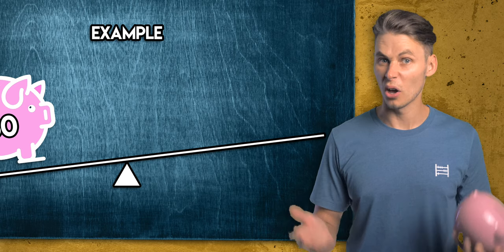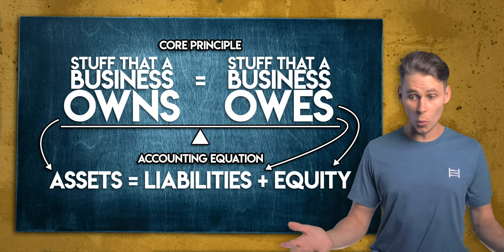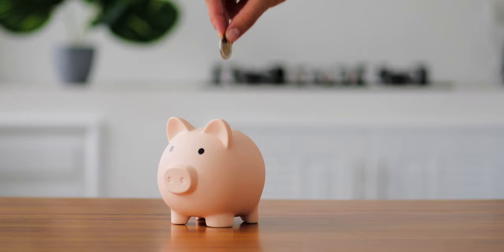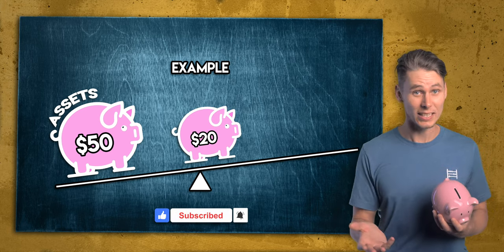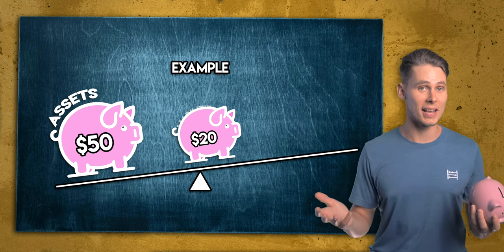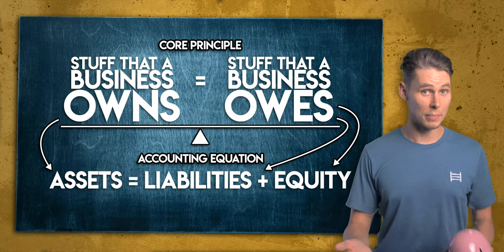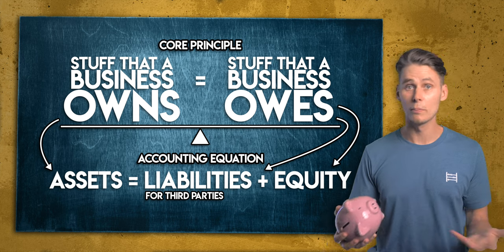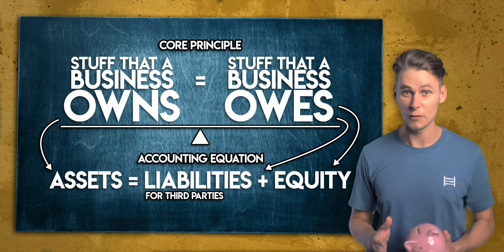But what about liabilities? I said that liabilities and equity are the stuff that a business owes — but to whom? Consider your piggy bank. Let's say that $20 of this cash was borrowed from a friend, so it's not technically yours. It's still an asset to your business, but it also represents a liability because it's owed to someone else. So a business owes liabilities to third parties — this could be money owed to a bank, a supplier or the tax office. Liabilities are the debts or obligations that it needs to repay in the future.